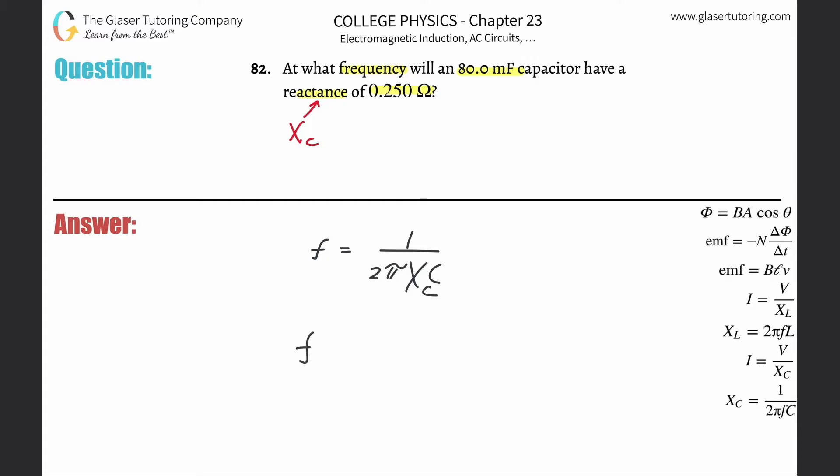So then plug in the values. There's going to be 1 over 2π times the capacitive reactance. That is going to be 0.25 ohms, those are the right units.